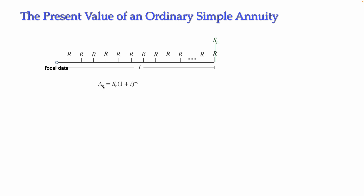Let's simplify this formula so that you don't need to compute the future value first. I'm going to use the symbol a_n to represent the present value of the annuity. If we substitute S_n by its known formula — the payment multiplied by [(1 + i)^n − 1] divided by i — and then multiply by (1 + i)^(−n), the first term becomes 1 and the second term becomes (1 + i)^(−n).